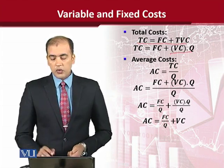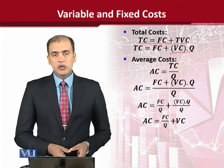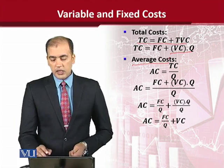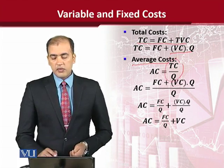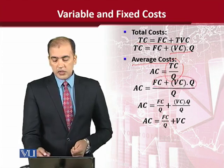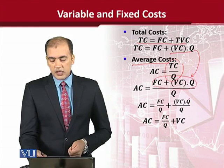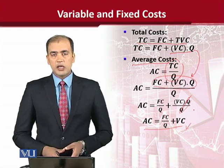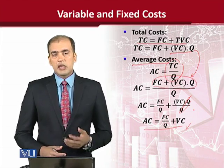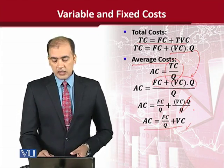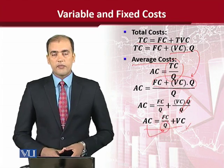Total variable cost को हमने decompose करके लिखा — cost per unit and the total output. अगर आप average cost निकालना चाहें तो आप total cost को output से divide करेंगे. जब हमने total cost की value को substitute किया तो cancellation हुई, और final result आया: AC = FC/Q + VC. यह average cost एक variable पर depend करती है.